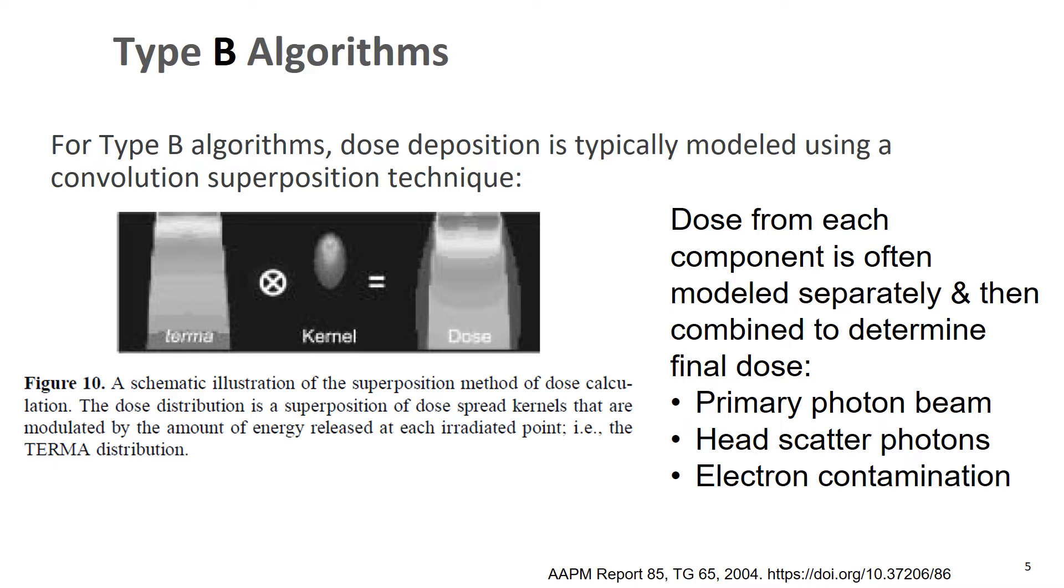And just a little more detail about how these algorithms work. So type B algorithms, the dose deposition is typically modeled using a convolution superposition technique. So you can see in this figure here on the left, we have the terma, and then we have a dose convolution kernel. And so you convolve that terma with that dose kernel and you end up with dose.